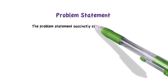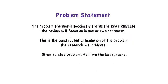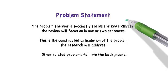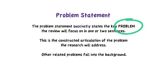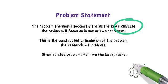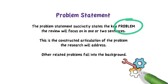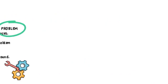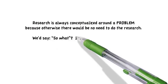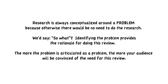We begin with the problem statement. The problem statement contains a sentence or two that states the key problem the review will focus on. It needs to be articulated as a problem — the problem that the research will address. There would be many other related problems, but these will fall into the background. You'll bring one problem into the foreground; that's the focus of this research.